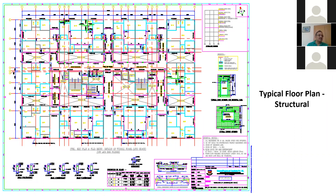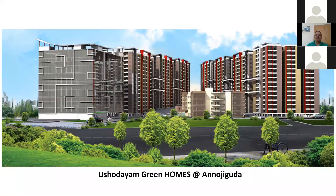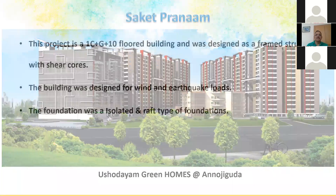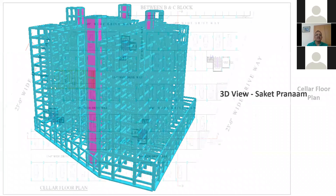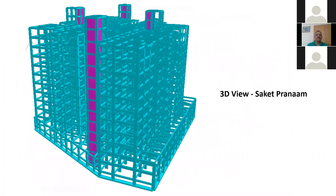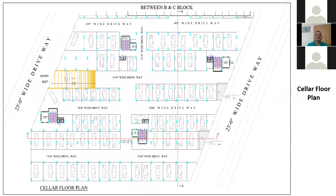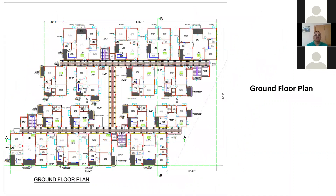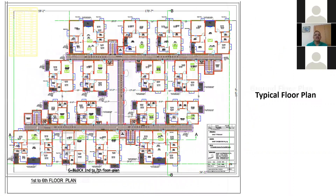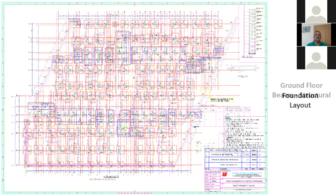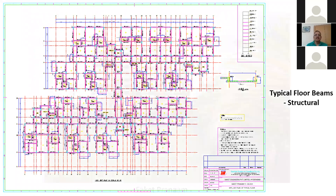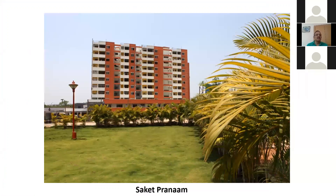Adjacent structures must also be considered. Another project — Pranam — used only a shear core and frame up to 10 floors with two parking floors, isolated footings, and a completed structural system as shown.